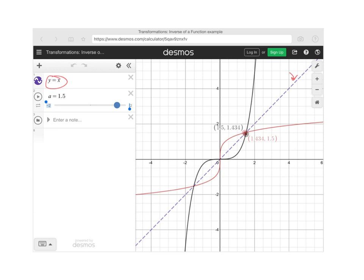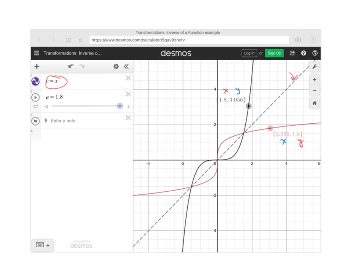We're going to see that the x value and the y value are literally switching places. I've stopped it right here. When x is 1.8, this y value is 1.8. And then when y is 3.056, the inverse function, the x is 3.056. As you can see, this happens the entire time.